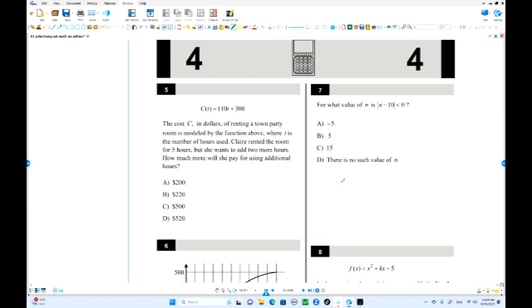Here is number 5. C is the total cost and the number of hours used. Claire rented a room for 5 hours. She wants to add 2 more hours, so 2 hours difference. They are going to charge you 110 over here. We start at 300. Every hour it increased by 110.